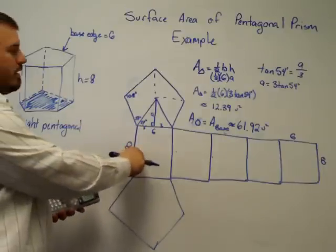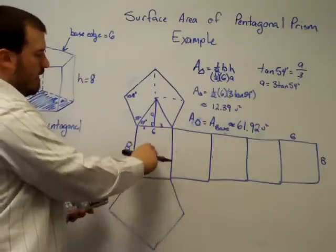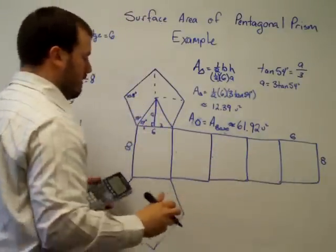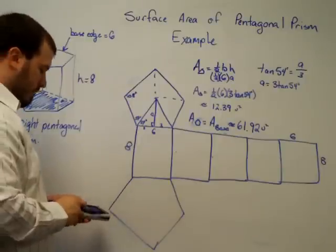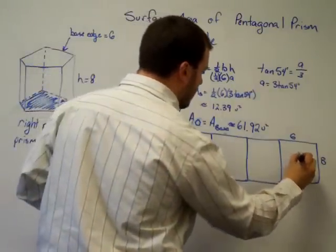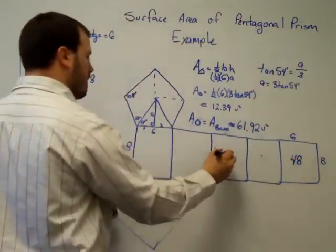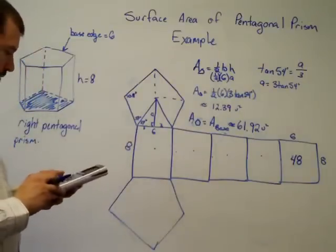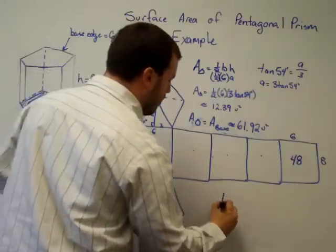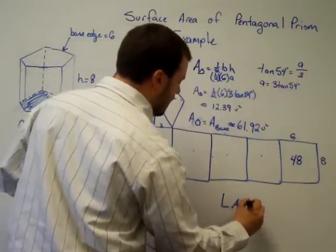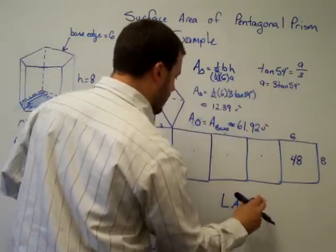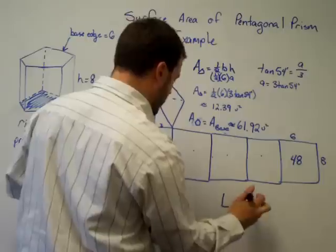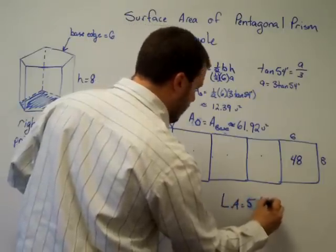And now we just need to double that and then add it to the lateral area. So each rectangle is six times eight, or 48 units squared. And there's five of those. So we're going to be 48 times five. So our total lateral area is five times 48, or 240 units squared.